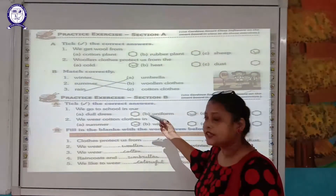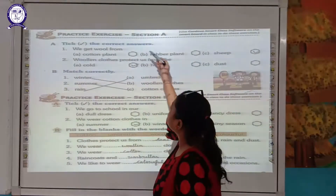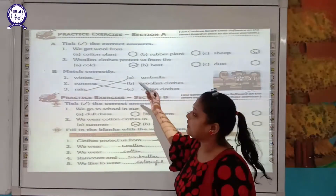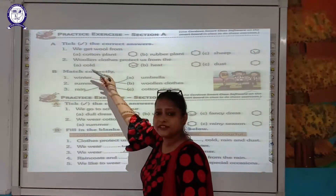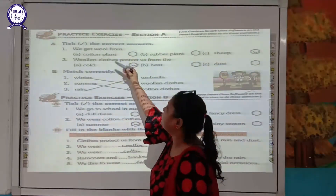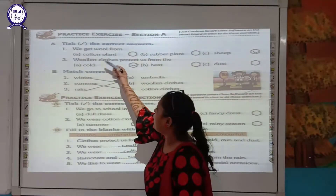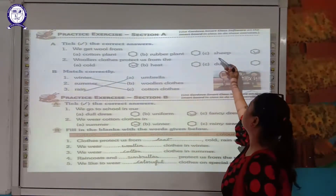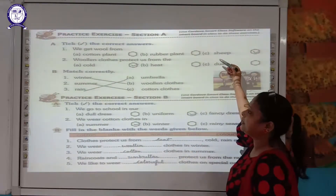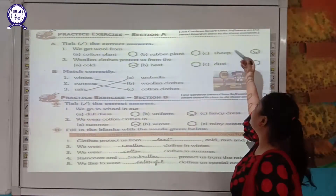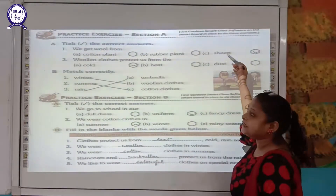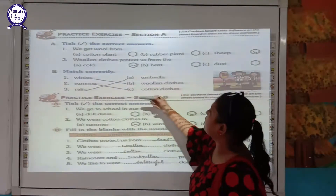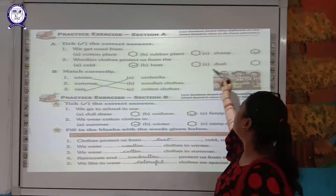It is time to do the exercises. Pick the correct answer. First question: We get wool from — cotton plant, rubber plant, or sheep? Yes, we get wool from sheep. You can also get wool from a camel. Second question: Woolen clothes protect us from — cold, heat, or dust? Yes, woolen clothes help keep our body warm, so they protect us from the cold.